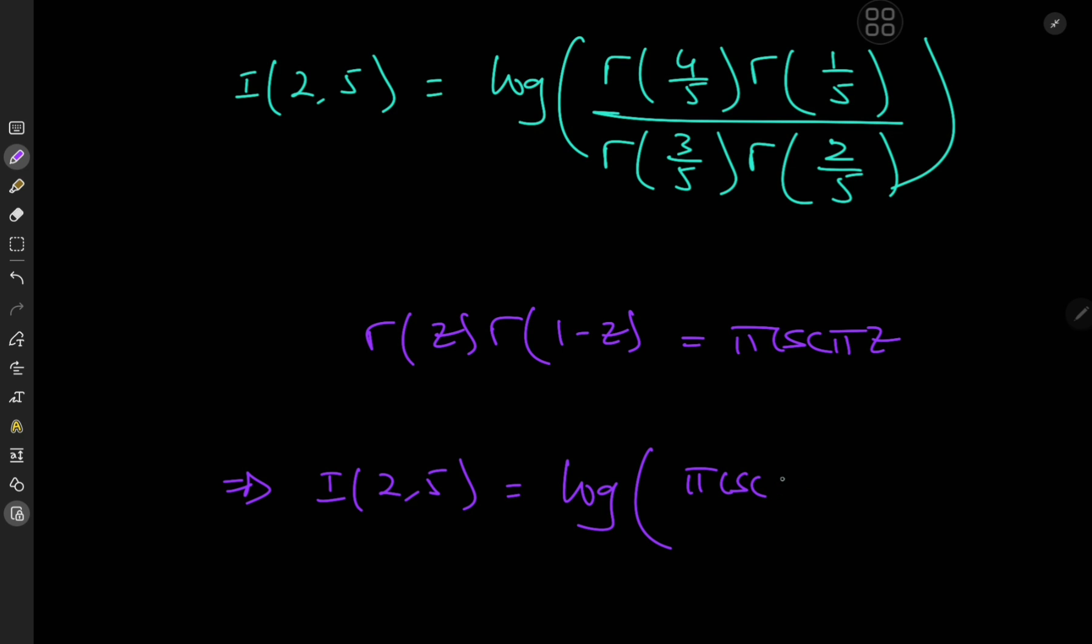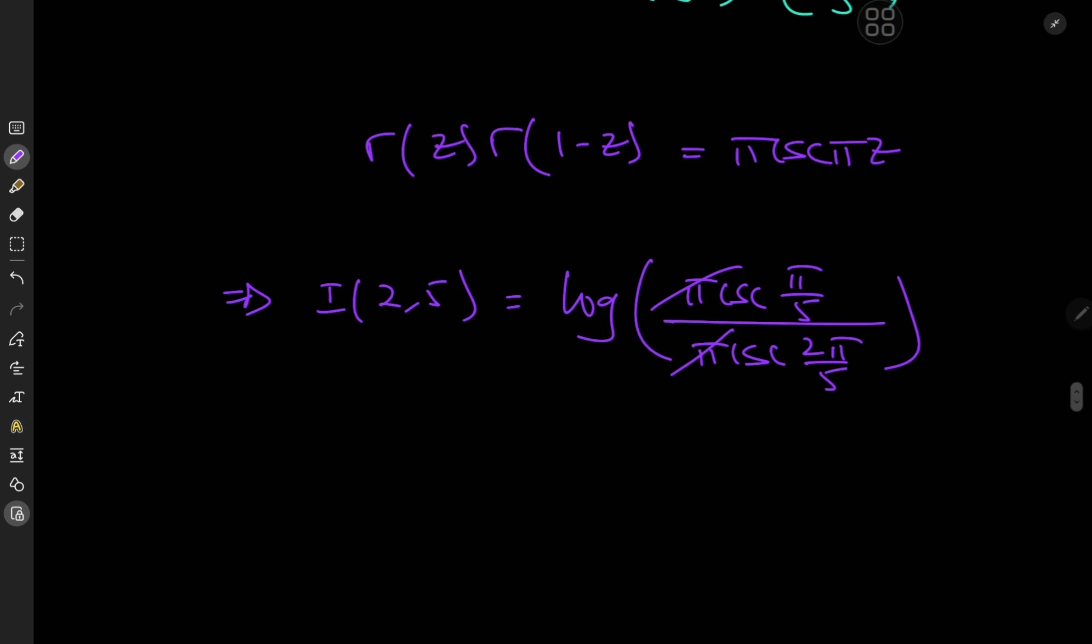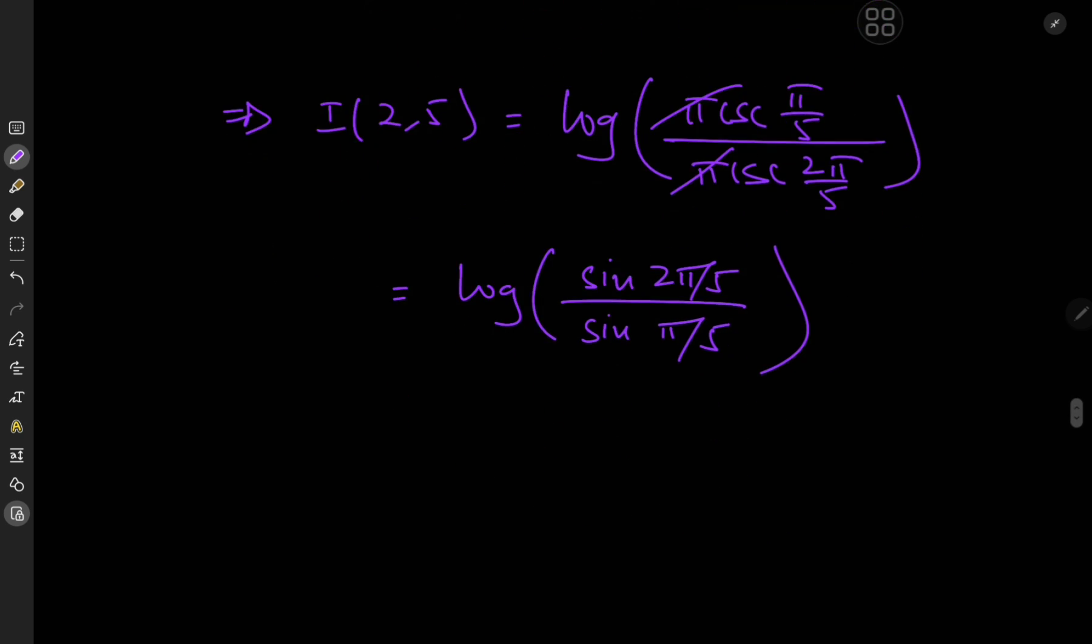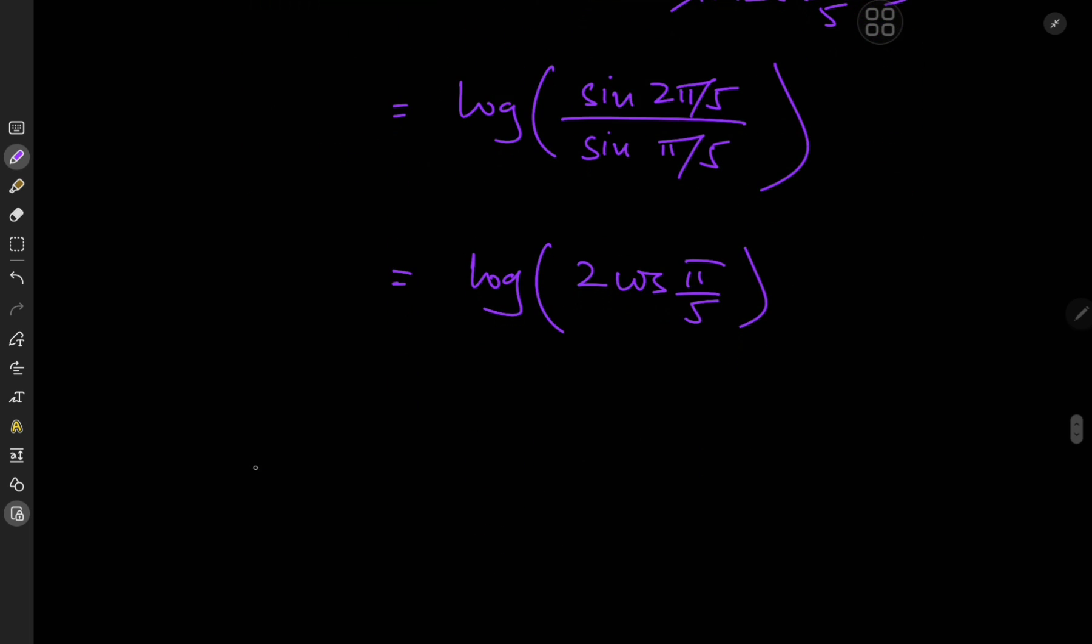This implies that I at 2 and 5 equals the logarithm of pi times the cosecant of pi by 5 divided by pi times the cosecant of 2 pi by 5. The pi's cancel out nicely, and we're left with the logarithm of sine 2 pi by 5 divided by sine pi by 5. Now using the double angle formula for the sine function, sine 2 pi by 5 can be written as 2 sine pi by 5 times cosine pi by 5, so we're left with log 2 cosine pi by 5.